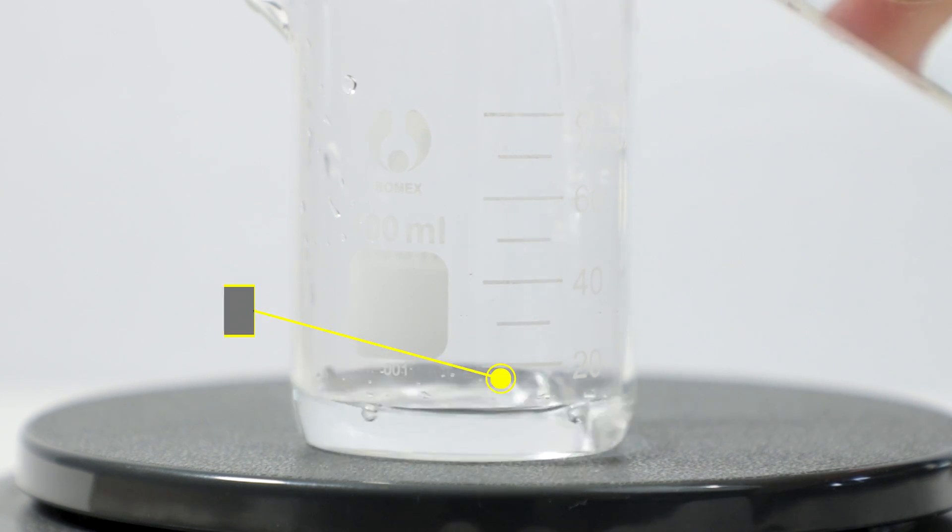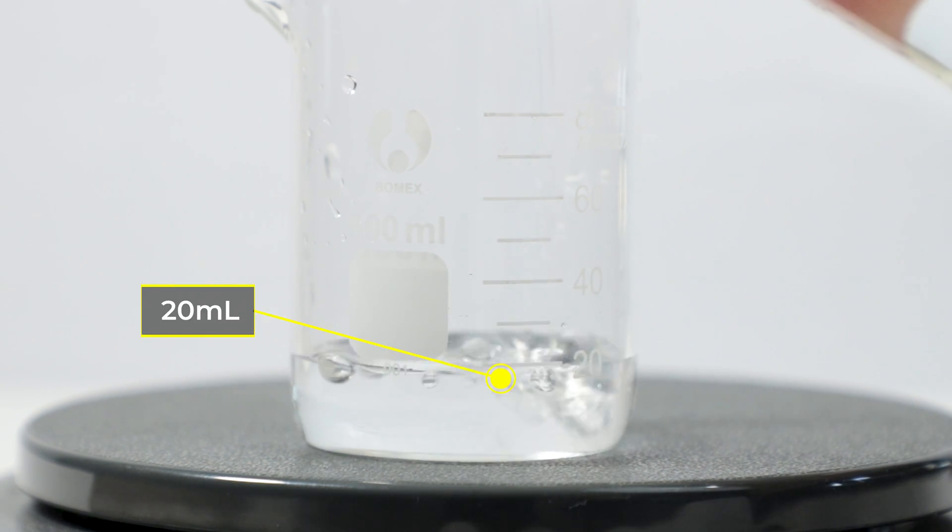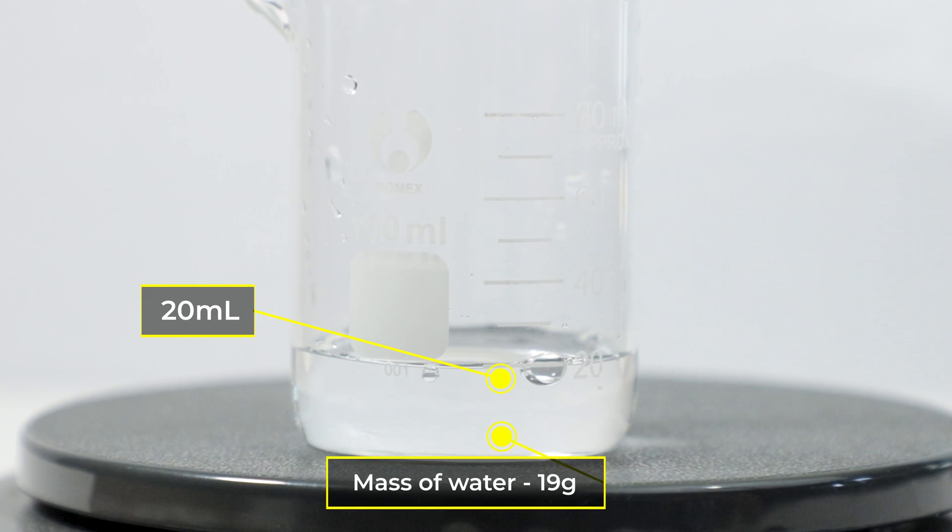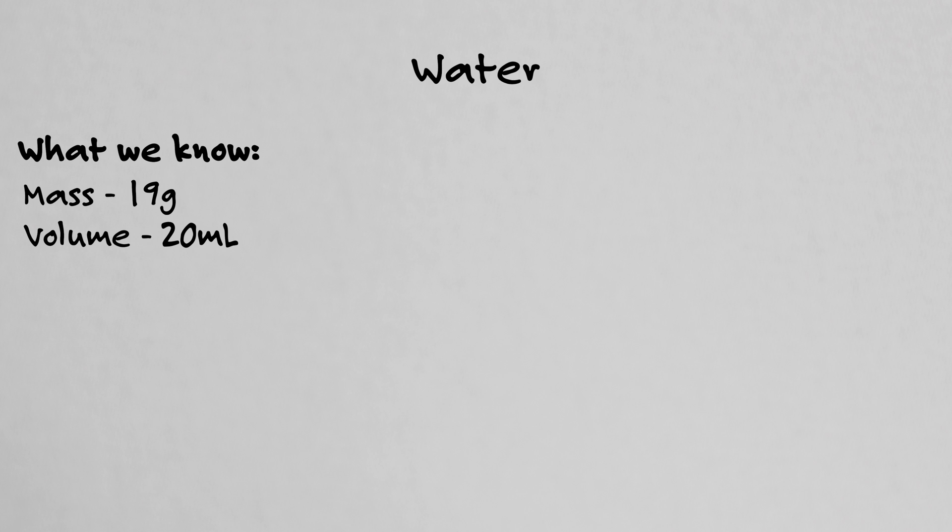Now add 20 milliliters of water to the measuring cup. This is our volume. The scale does the work and gives us the mass of water and I have 19 grams. Now we do the calculation. We divide 19 grams by 20 milliliters and that gives me a density of 0.95 grams per milliliter. That rounds to 1.0 grams per milliliter.